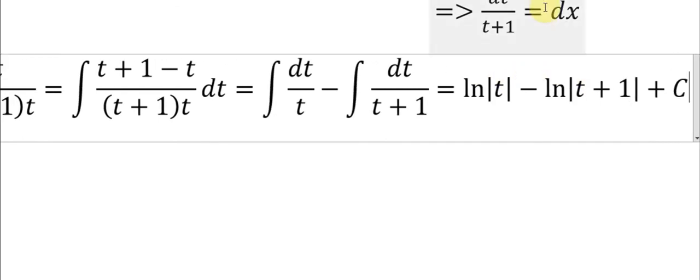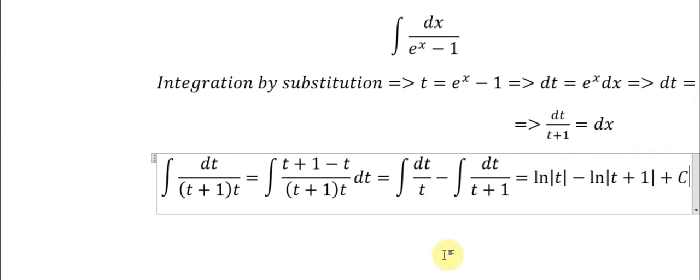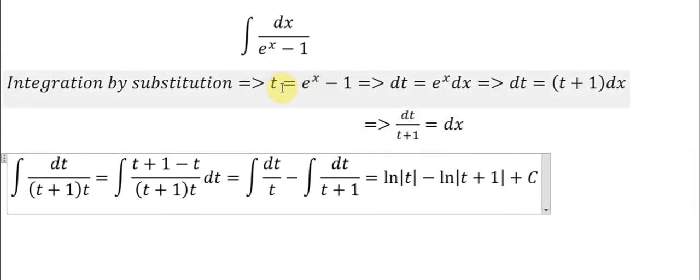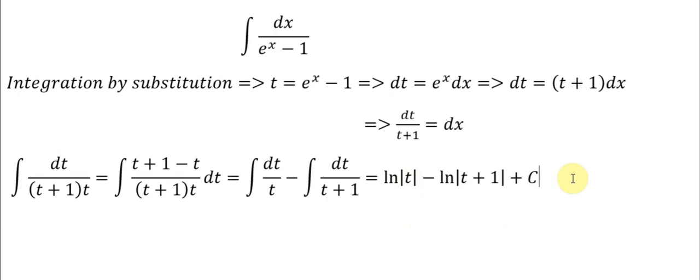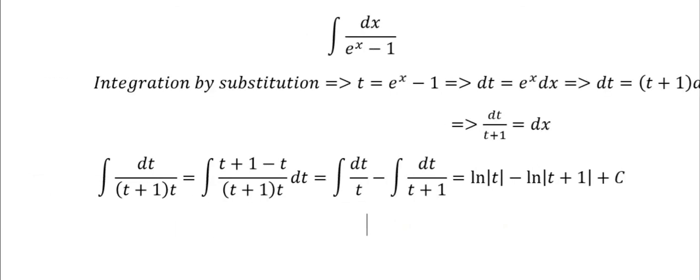Adding the constant of integration C. Now we convert back to the original variable by substituting t equals e^x minus 1, giving us ln of e^x minus 1 minus ln of e^x plus C.